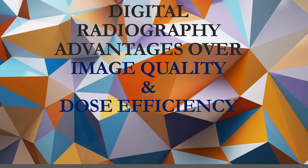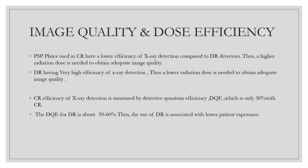Our next topic is image quality and dose efficiency — how digital radiography has more advantages over CR in this area. The PSP plate used in CR has a lower efficiency of X-ray detection compared to DR detectors. Therefore, a higher radiation dose is needed to obtain adequate image quality in CR, whereas DR has very high efficiency, requiring a lower radiation dose.